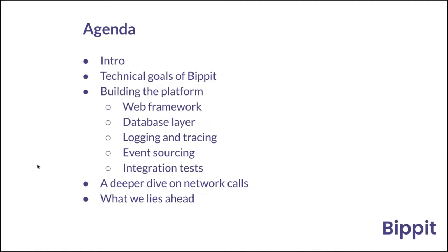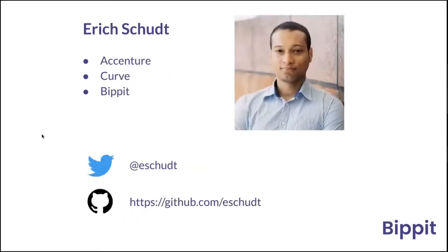And then finally, we talk about what we plan to do with Rust on our platform going forward. About me: I started my career at Accenture, working on a lot of software engineering projects around the UK, mostly in Java. I was trained in Java, built a lot of features in it, and then started thinking about other languages — did some C#, C, and C++. I really liked getting lower and lower to the computer level, and did some assembly as well.